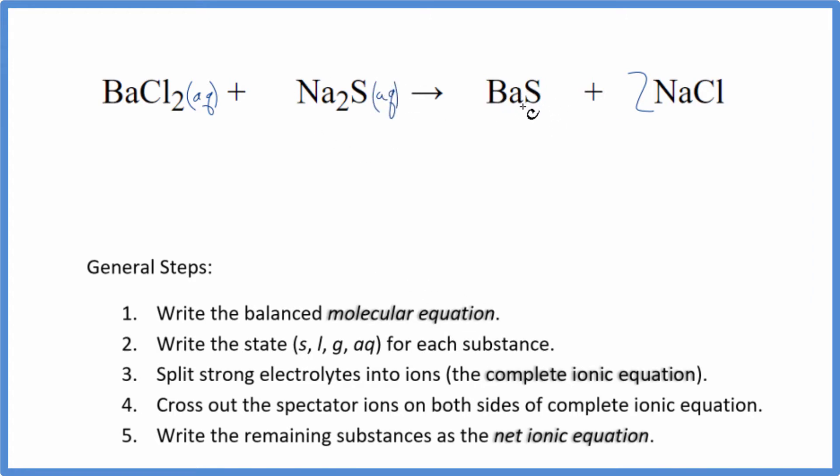So for barium sulfide, barium sulfide is slightly soluble. Some of it will dissolve, not very much. So when this reaction takes place, most of it falls to the bottom of the test tube as a precipitate. So we're going to put an S because it's slightly soluble. We're going to say it's a solid since that's what most of it will end up being there. And then chlorides and sodium compounds, very soluble. A little AQ after that.